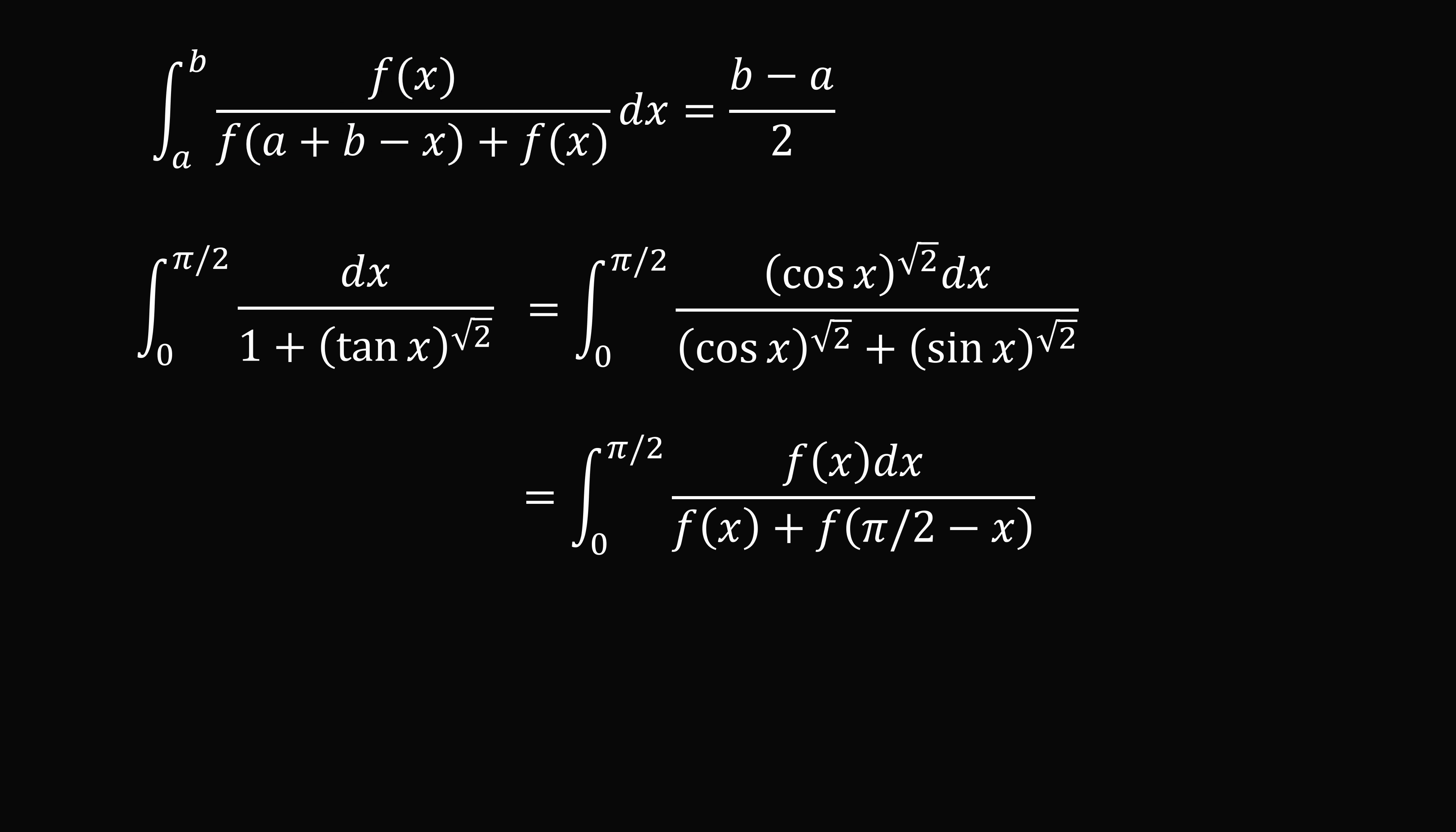So we can exactly apply King's rule and this integral is equal to pi over 2 minus 0 divided by 2, which equals pi over 4. And that's the answer.